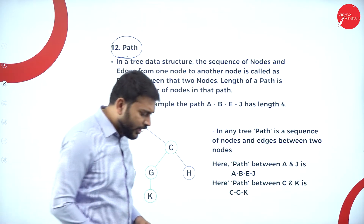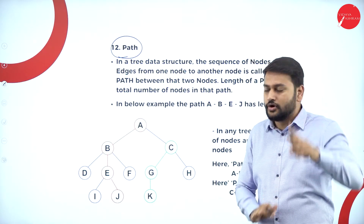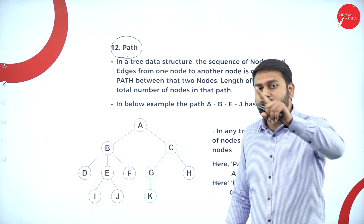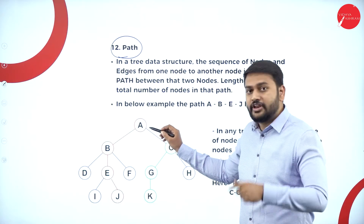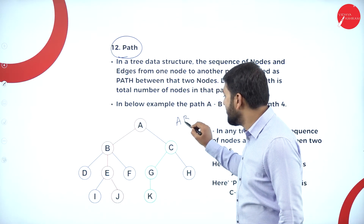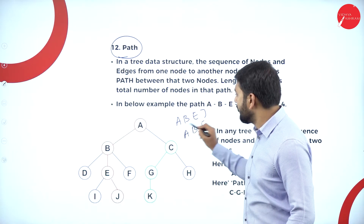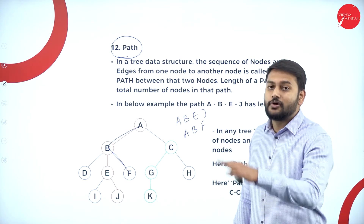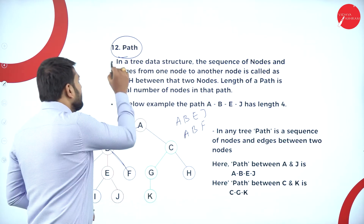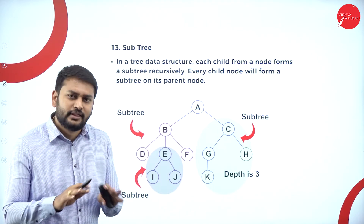Moving forward to path. Path is the sequence of nodes that you come across between the starting node and the end node. For example, the path from A to J is: A, B, E, J. The path from A to F is: A, B, F. This is what we call a path — the sequence of nodes from starting to ending node.